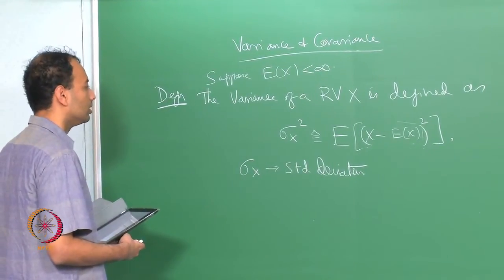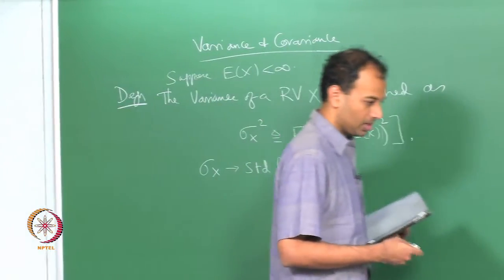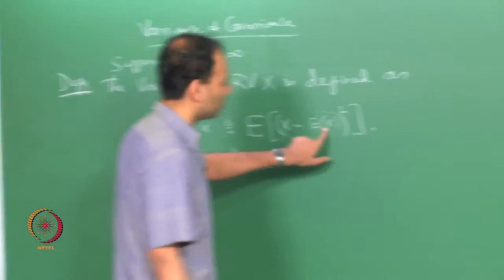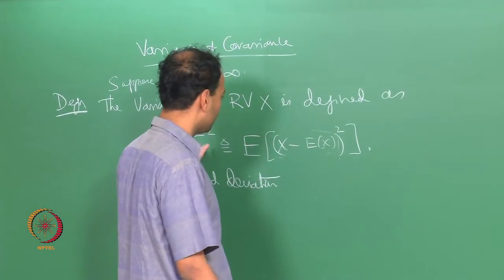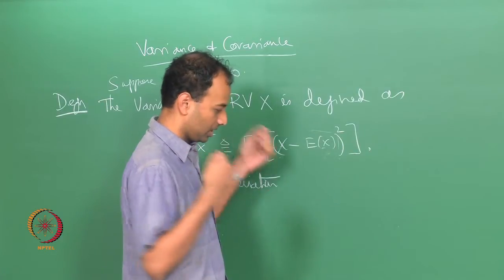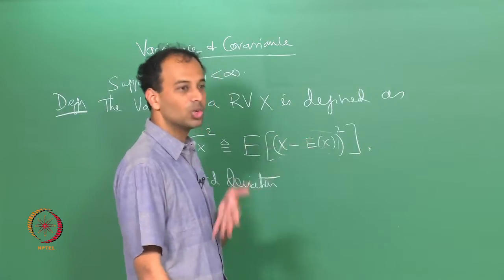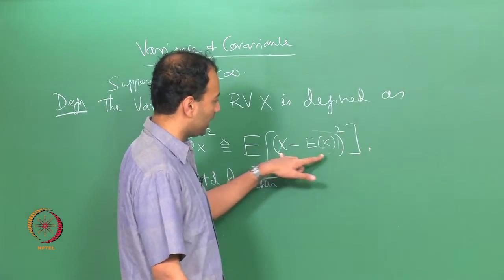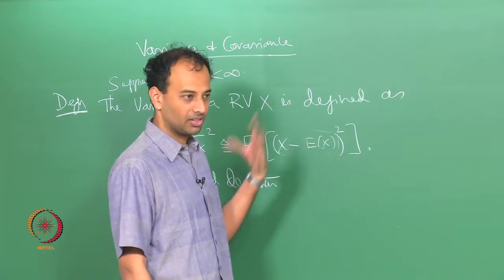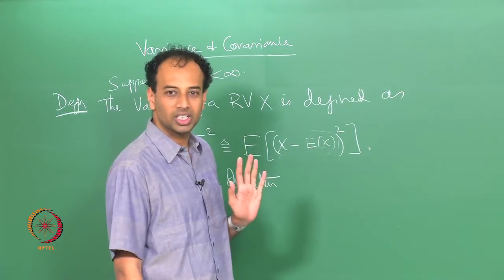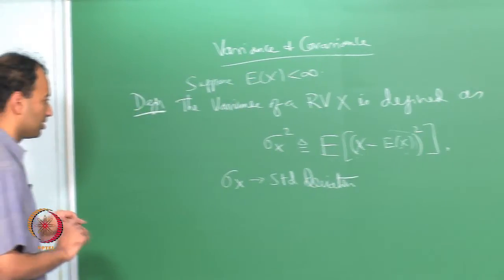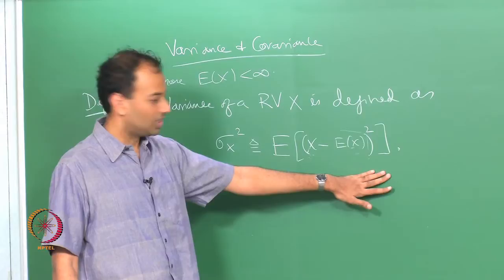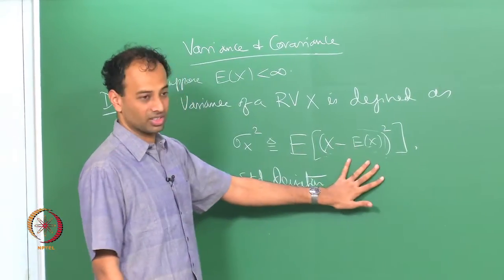Intuitively, variance gives a measure of how much the random variable deviates from its expected value. A large variance means the random variable takes values spread widely around the expected value, while a small variance means values tend to be close to the expected value with higher probability. Clearly, variance is non-negative by definition.